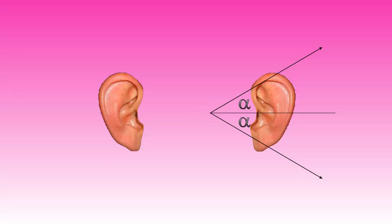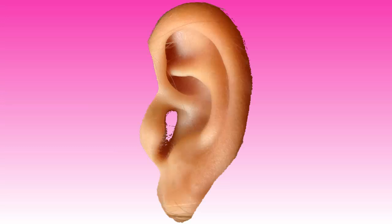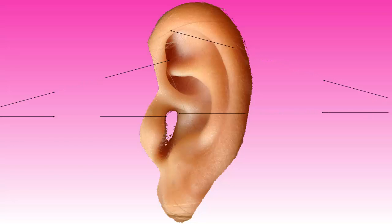Our brain does not know, however, whether the sound came from the front or from the back — that's where your ear shape comes in. Your ear shape is such that it generates a small echo. This echo is different for sounds coming from the front and sounds coming from the back, thus giving us the direction of the sound.